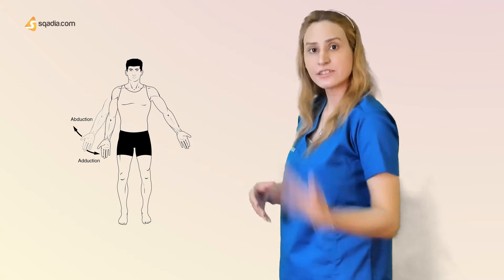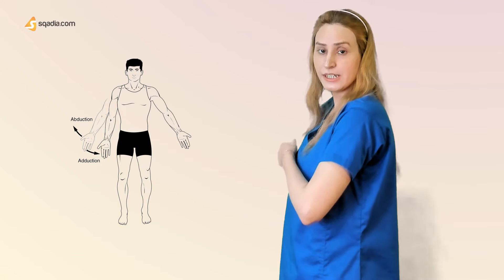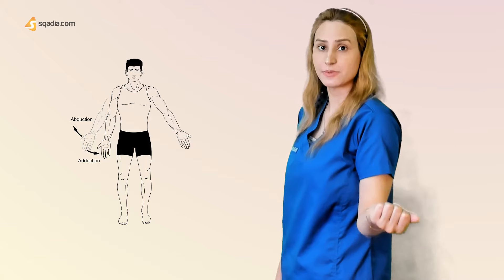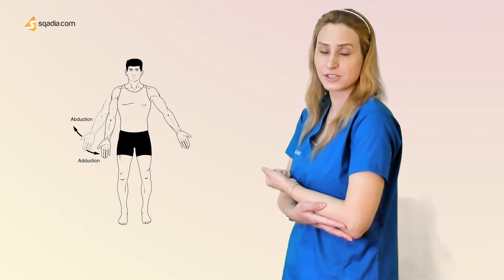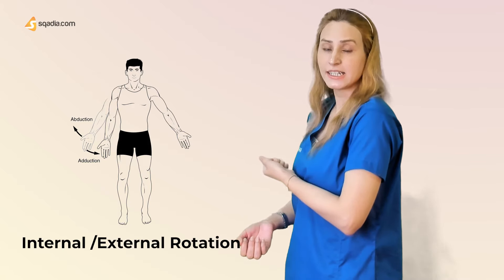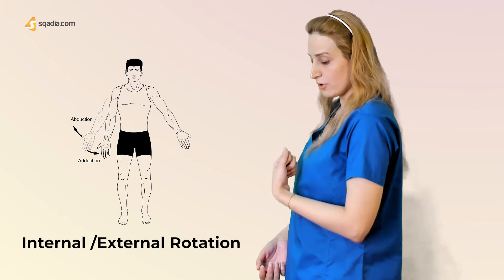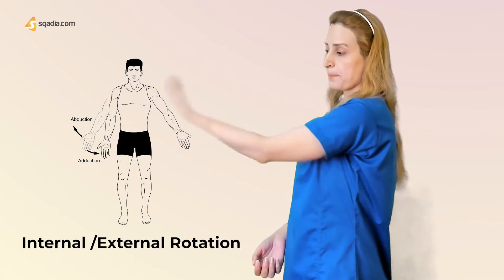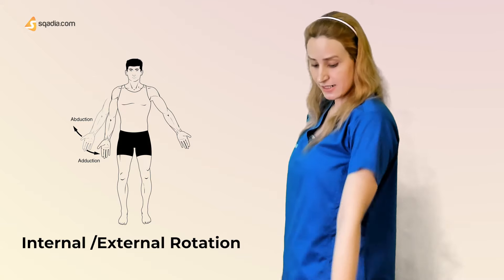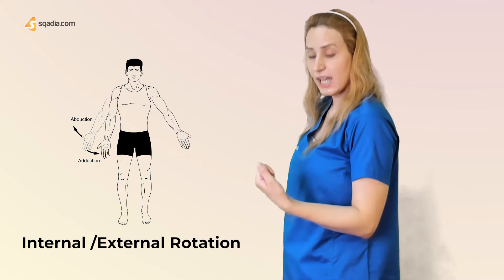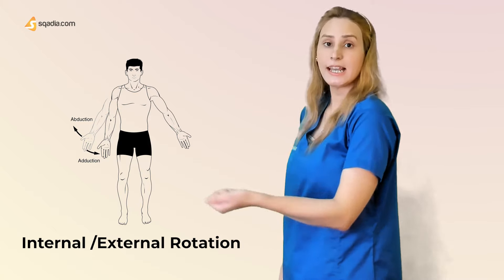We also have internal rotation and external rotation. For internal rotation, flex your arm and rotate it toward your body — that is internal rotation. And this is external rotation. So in a flexed position, when you take your arm toward your body that is internal rotation, and when you take it outward, that is external rotation.